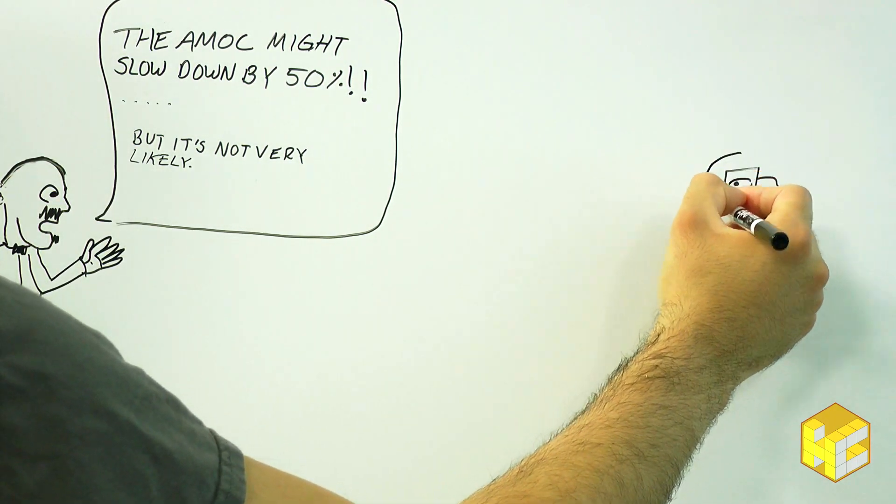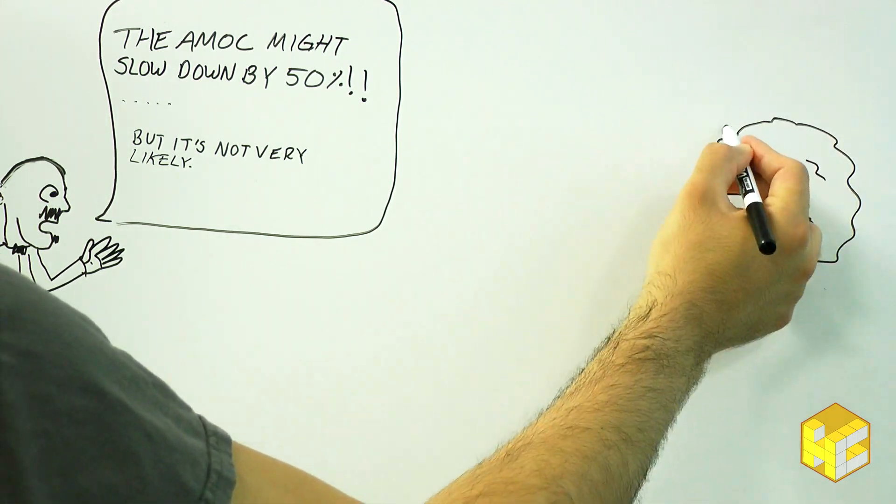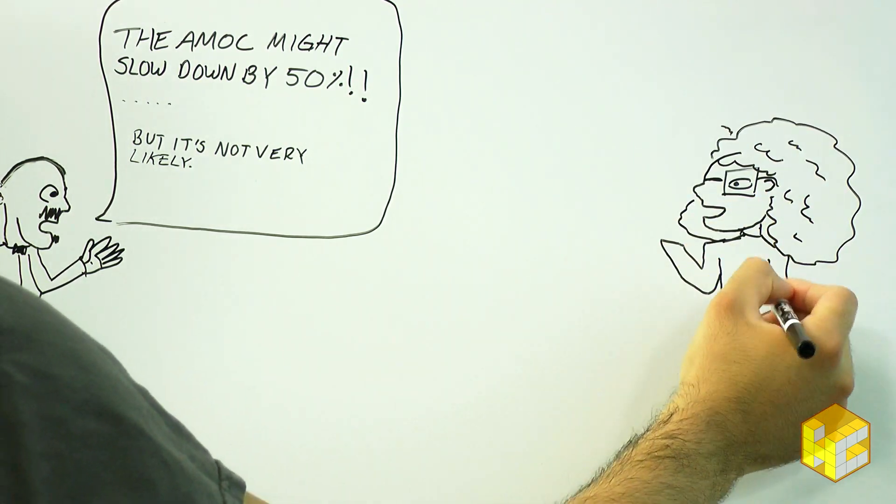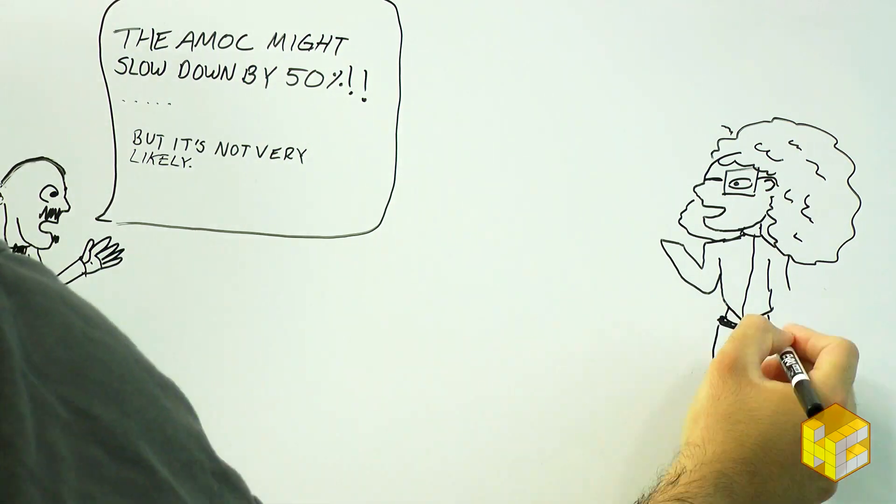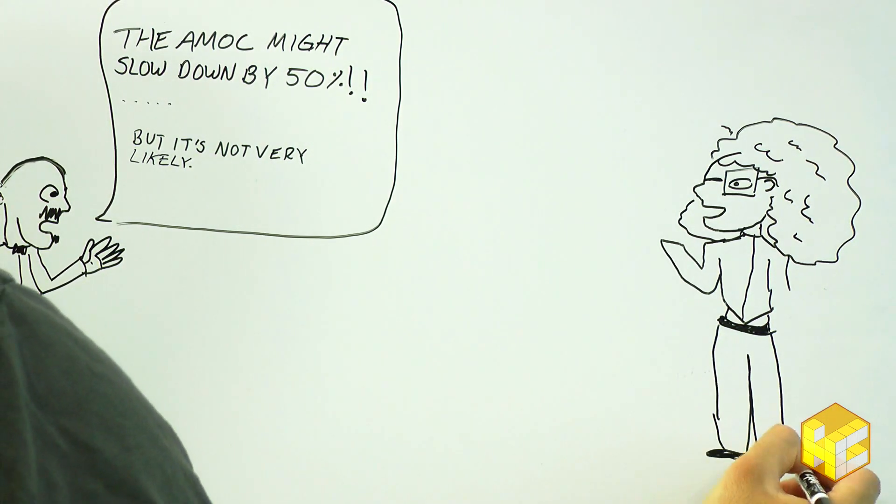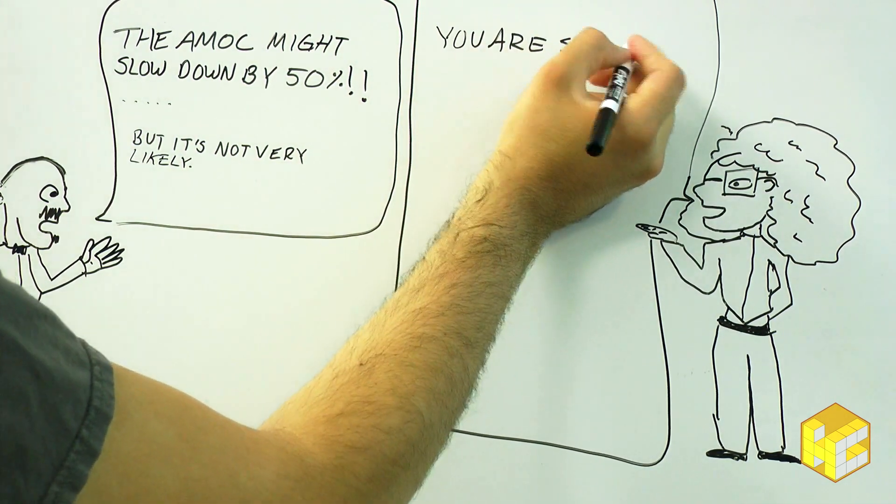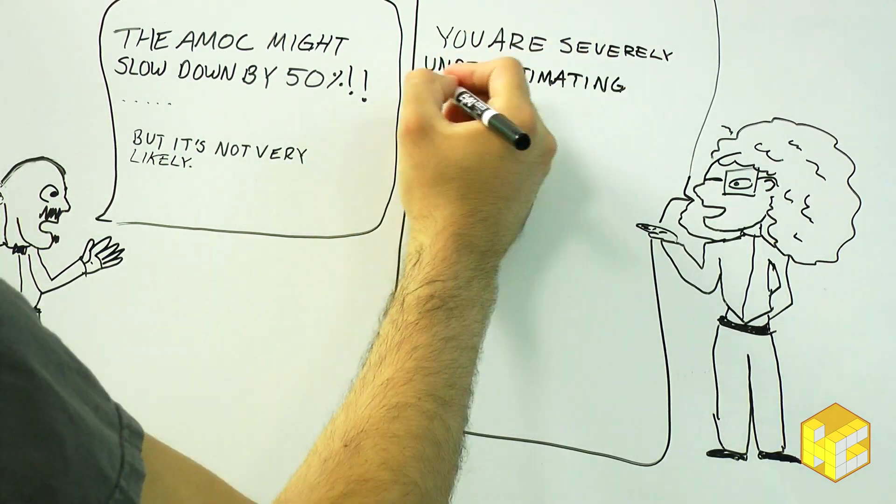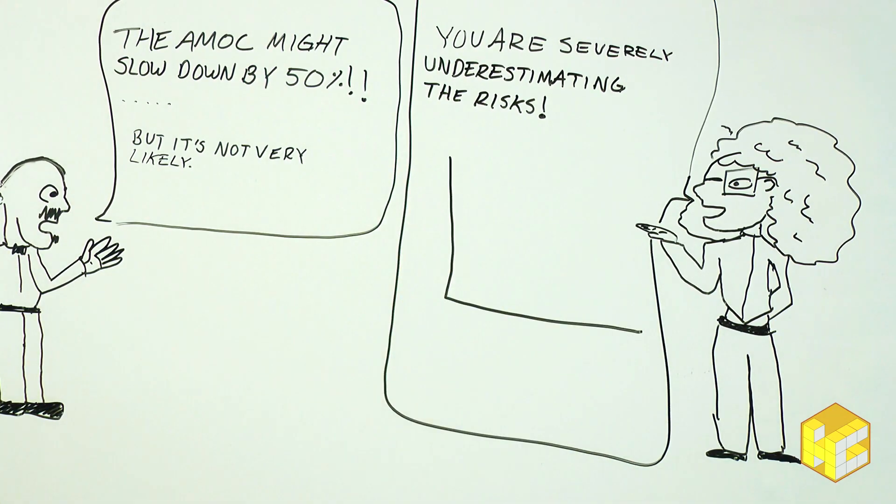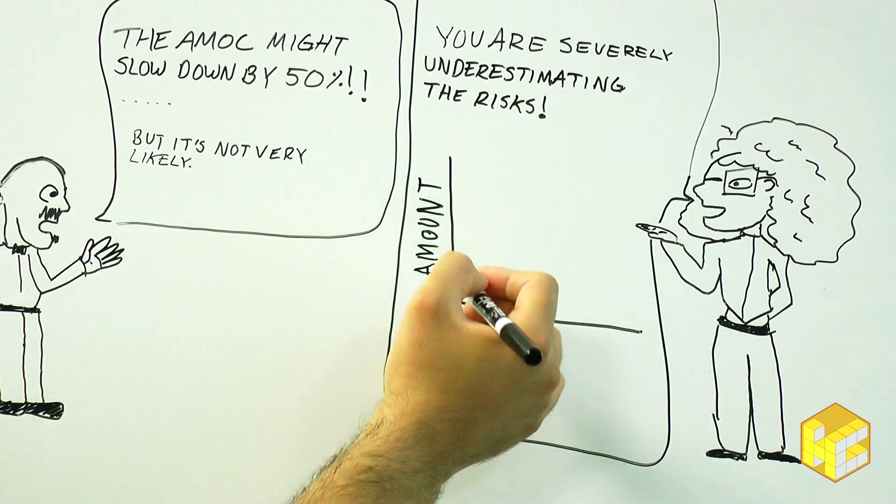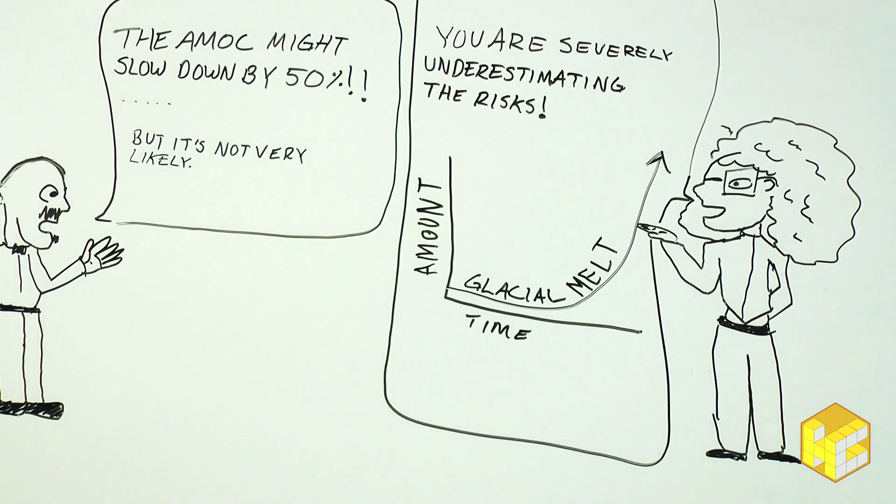Some claim that glacial melt increases exponentially because multiple processes create feedback loops that cause the ice to melt increasingly faster. Models created with this in mind show that the Southern Ocean near Antarctica has a leading role to play in climate change, whereas previous research focuses on the Arctic.